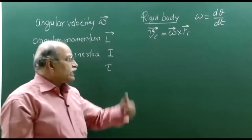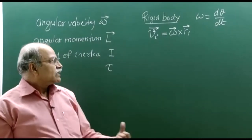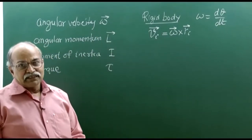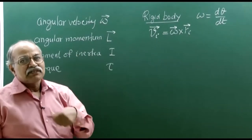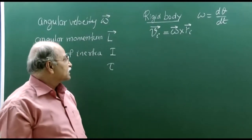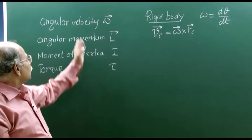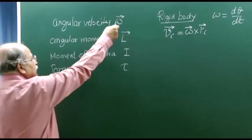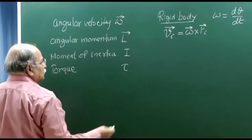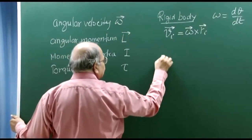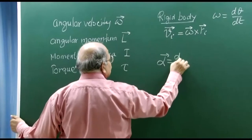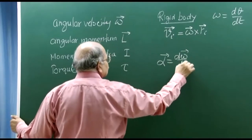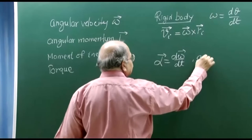If something is rotating about a fixed axis of rotation, or at any instant you can find the axis of rotation, then it is very simple. You just write the magnitude of angular velocity omega as dθ/dt, and the direction is along the axis. If things are rotating anticlockwise, it is towards the viewer; if clockwise, opposite to the viewer. You can also define angular acceleration alpha, which is dω/dt.